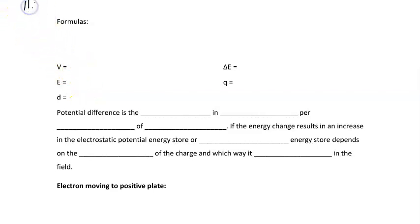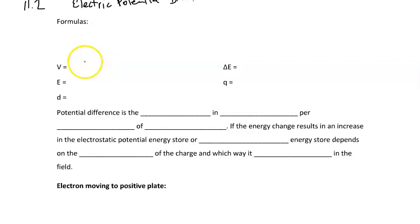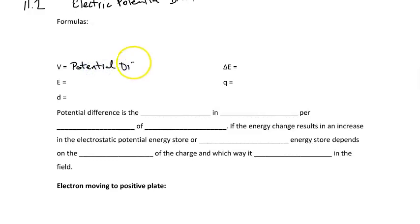Welcome to 11.2 in Physics 20, and we're talking about electric potential difference. You may remember electric potential difference as really just being the voltage of things — you may have called it voltage — but this is really what we call electric potential difference. Although the unit is in volts and the symbol is V, it's actually an electric potential difference, a difference in electric potential energy.